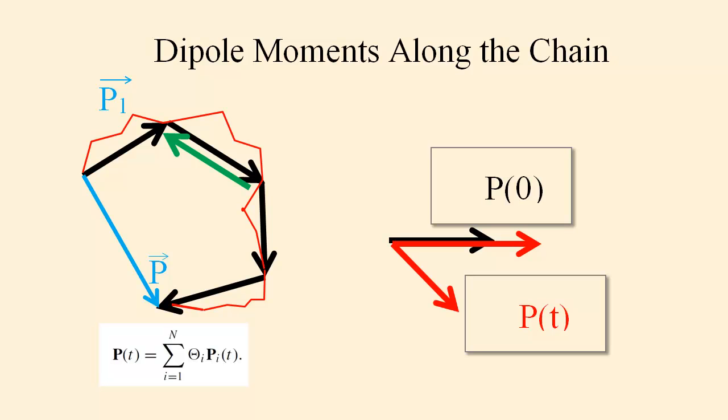The black arrow indicates the initial value of the dipole moment of the chain, P of 0. As time goes on, P of 0 is a vector. It has two possibilities for changing itself. One possibility is that it changes its direction in space, indicated by the red arrow pointing off to the lower right. That corresponds to end over end rotation of the polymer chain as a whole. Changes in the shape of the polymer chain that do not change the position of the two end points do not change the polymer chain's dipole moment.